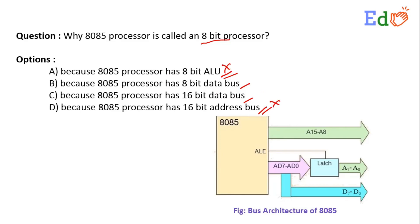So options A and D are incorrect. Option C states that the 8085 has a 16-bit data bus, which is a completely incorrect statement. Finally, Option B states that the 8085 has an 8-bit data bus. As already explained, the data bus width implies the processor bit width, so the answer is Option B: the 8085 processor has an 8-bit data bus.